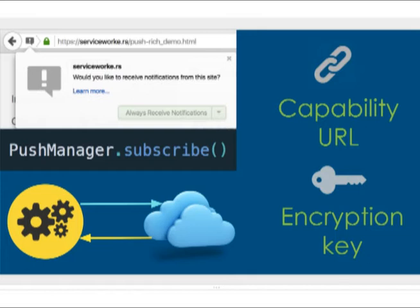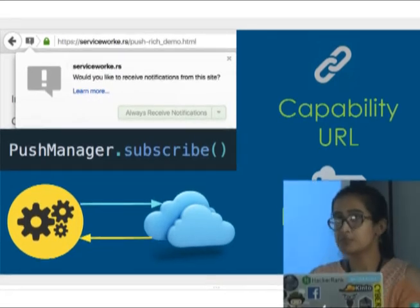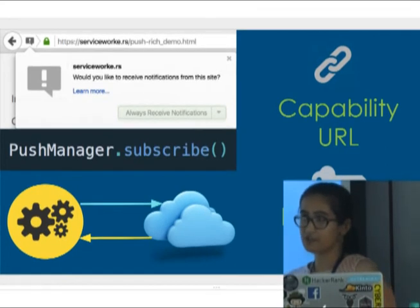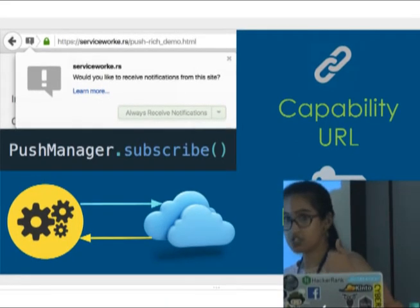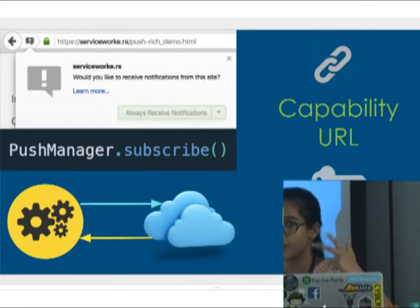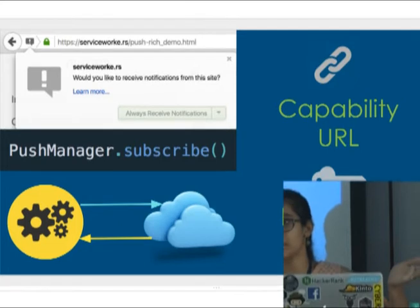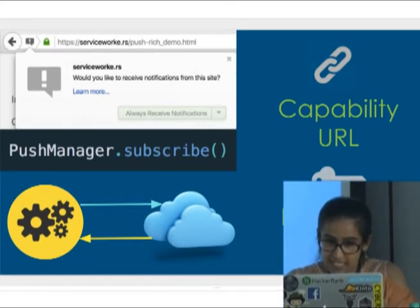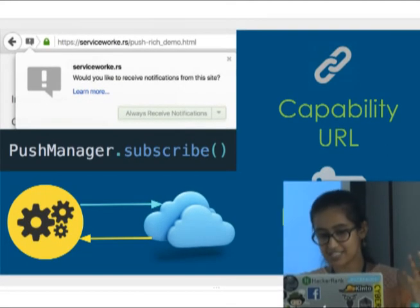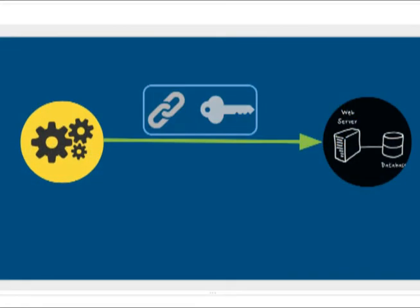Think of it this way: if you have top-secret material to be delivered, the agent needs to know what you want, where to deliver it, and how to wrap it so others don't find out. Similarly, the service worker sends across the encryption keys and the capability URL — the entire subscription — to the web app server, saying: this is my address and this is how you encrypt my payload and send it to me.